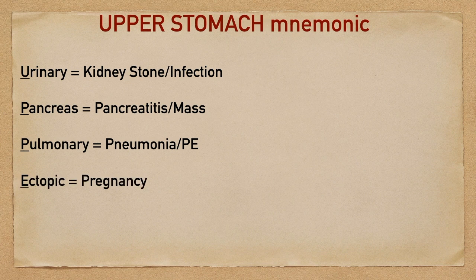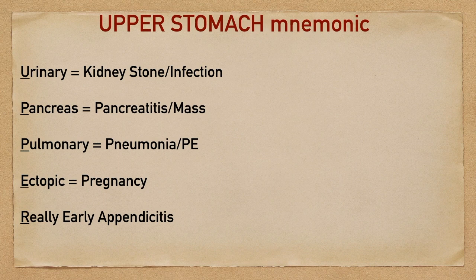E stands for ectopic, and this is going to help you remember to get that pregnancy test if appropriate. R stands for really early appendicitis. Most of the time appendicitis will present with right lower quadrant abdominal pain, but in the early presentation it could be generalized abdominal pain or even upper abdominal pain.